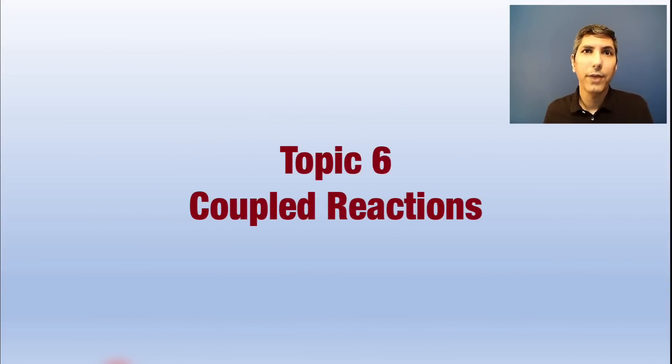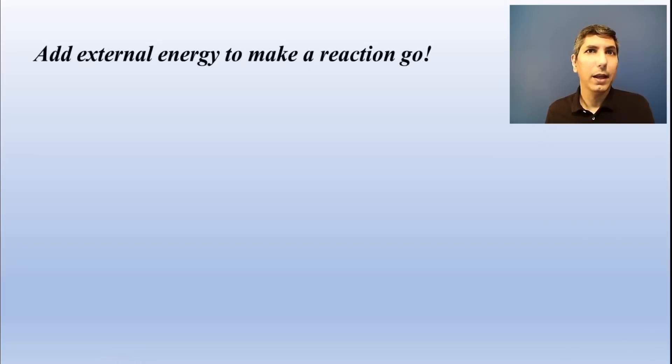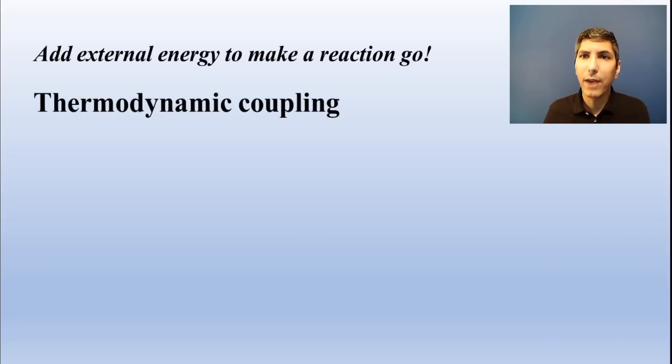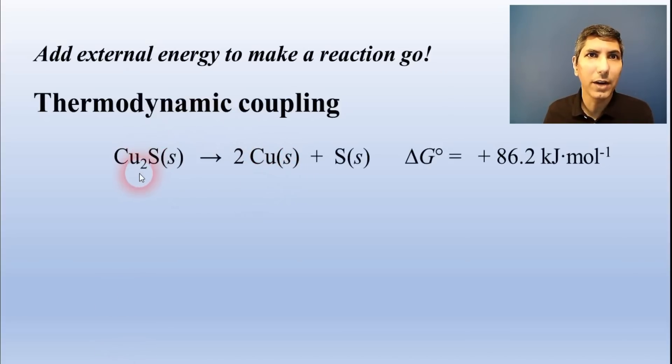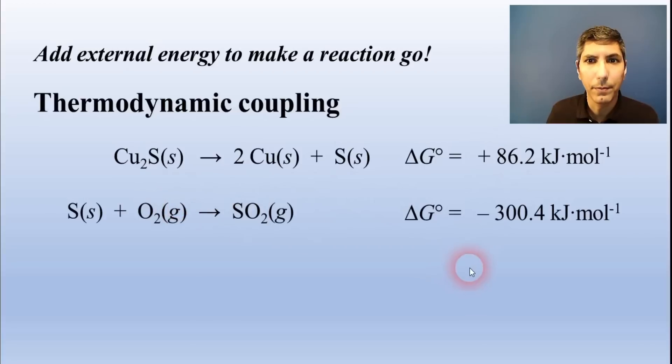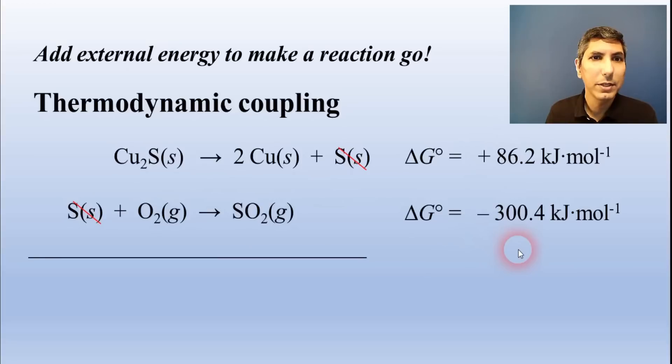Some reactions that are thermodynamically unfavorable can still happen. We might have to add external energy, like electricity or even light. This is how you charge a cell phone battery or get carbon dioxide to react with water in photosynthesis. Another way is to couple the unfavorable reaction with a more favorable one. For example, obtaining copper metal from copper 2-sulfide by itself probably isn't going to happen because the delta G is positive. It's unfavorable. But if we throw in this equation that is favorable and we add them together, we see that we just need to react the copper 2-sulfide with oxygen in order to obtain copper from copper 2-sulfide to have a process with a negative delta G.